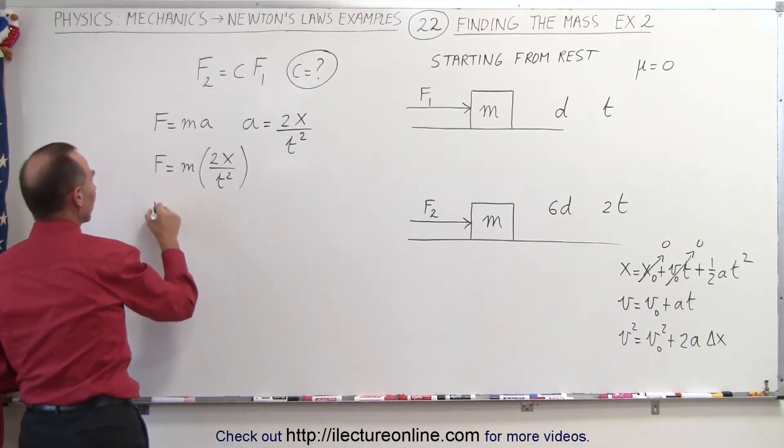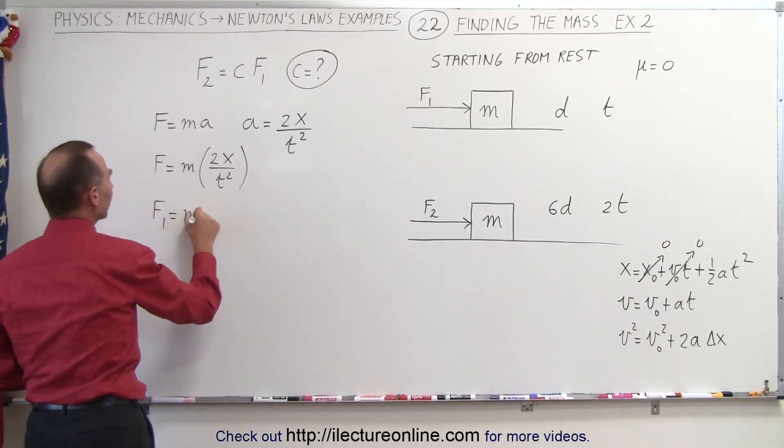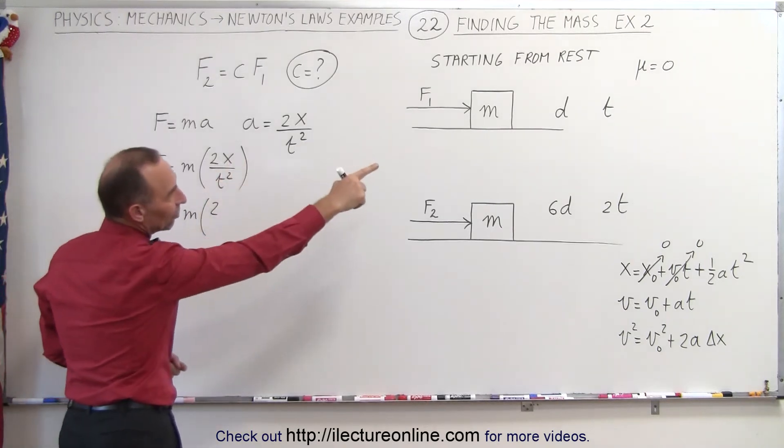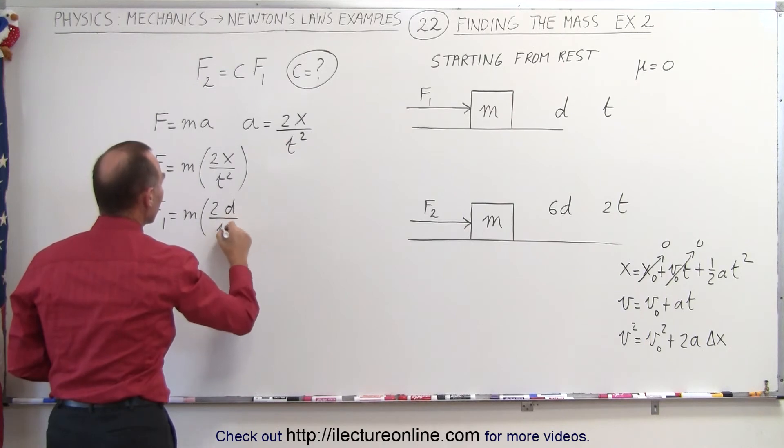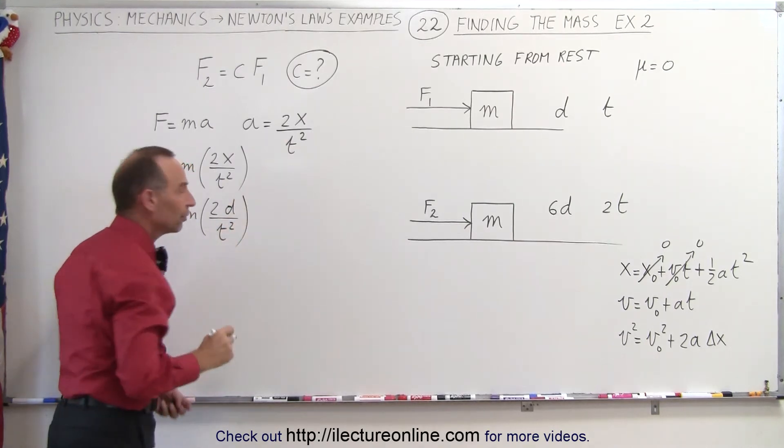So in this case we can write f1 is equal to the mass times twice the distance, and the distance for case one is d, and the time is t, so it'll be twice the distance over t squared.